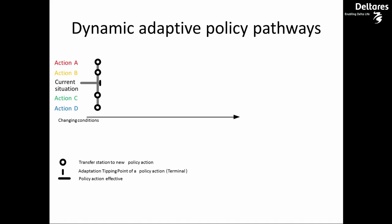In this illustration, there are four potential actions. Actions A and D are robust — they can withstand a lot of sea level rise and still meet flood risk objectives. This could be, for example, elevating roads and houses. The downside of these types of options is that they're usually expensive, have large social impact, and may turn out to be an overinvestment.